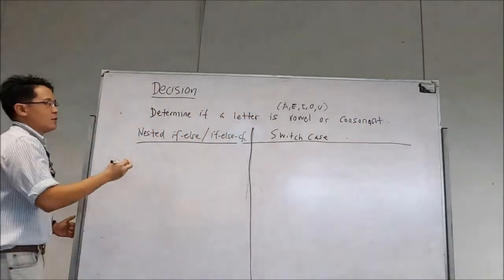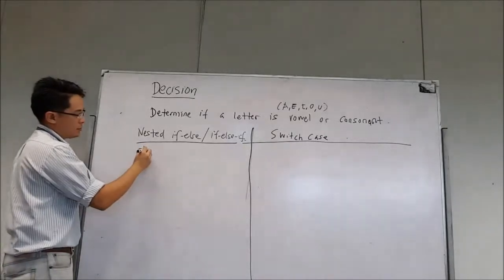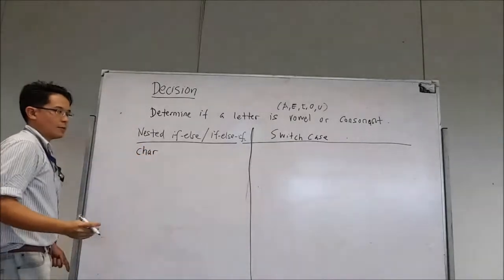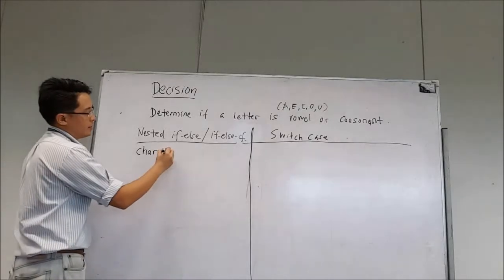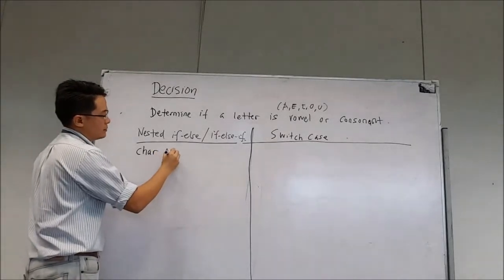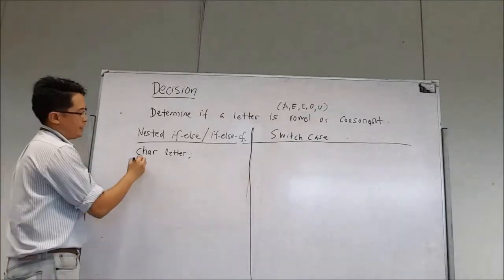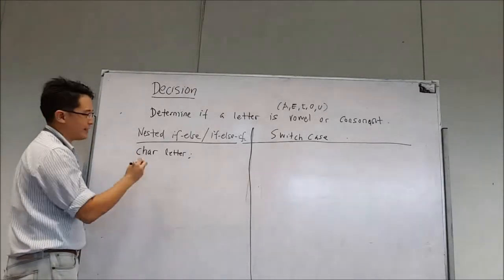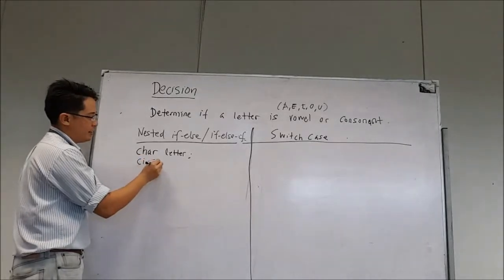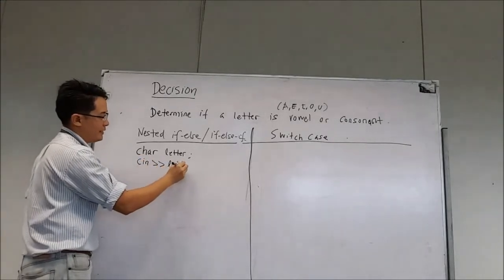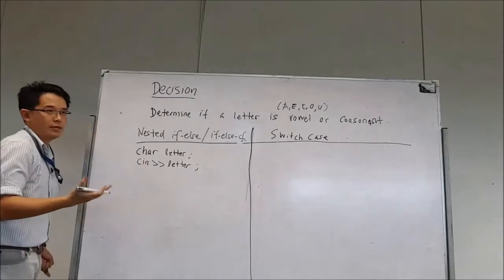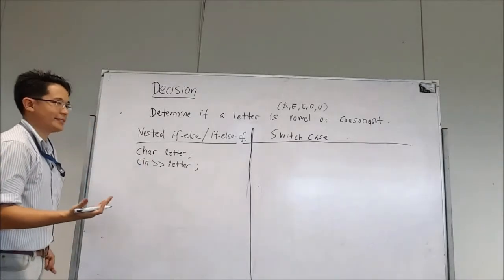Now let's say we have a character, let's call it letter, and then let's say C out please enter a letter and then you see in into letter. I skip the C in just to make the code less complex.